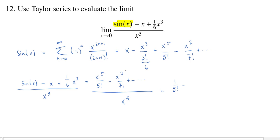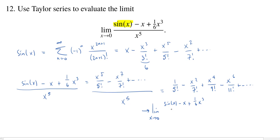Then we have minus x squared over 7 factorial. If we keep going, we get x to the fourth over 9 factorial, minus x to the sixth over 11 factorial, and it continues. Now, taking the limit as x goes to 0, each of these pieces after the first one has an x in it, so they all go to 0. This implies that the limit as x goes to 0 of sine of x minus x plus one sixth x cubed, over x to the fifth, equals 1 over 5 factorial.